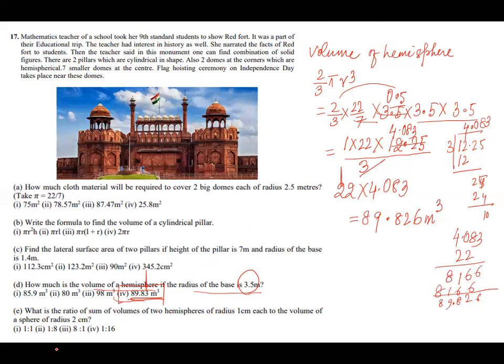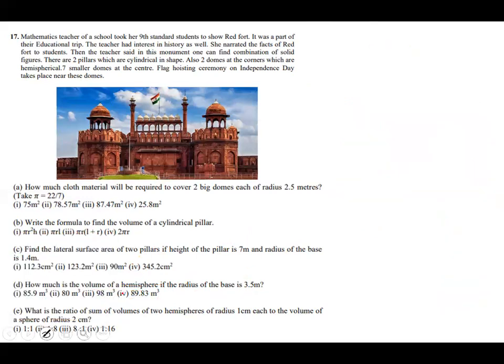Now coming to last part. Last part says what is the ratio of sum of volume of two hemispheres upon volume of one sphere. Here radius is 1 and here radius is 2. What is the ratio of it? This 2 will be added. So volume of hemisphere is 2 by 3 pi radius 1 cube, and there are 2 such, so into 2, upon ratio of volume of sphere of radius 2.